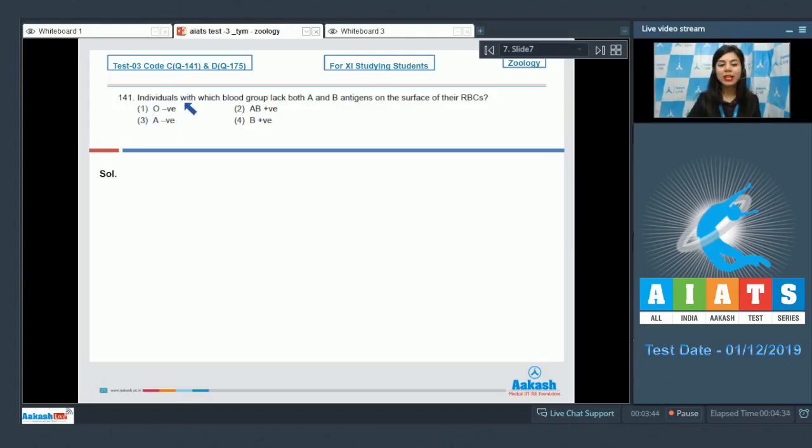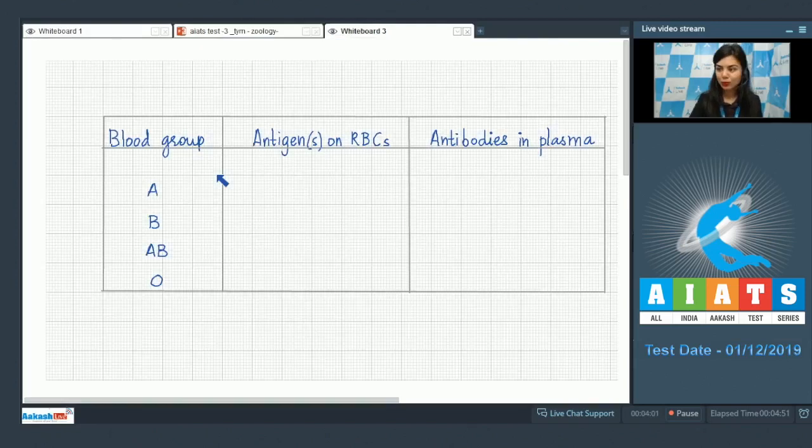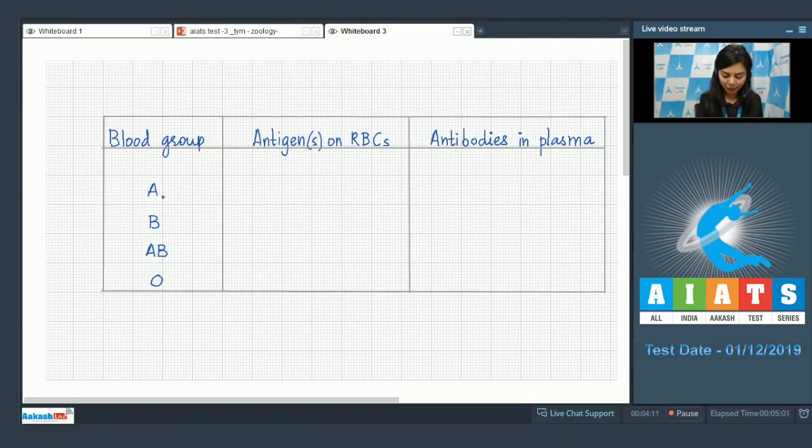Question number 141: Individuals with which blood group lack both A and B antigens on the surface of their RBCs? O negative, AB positive, A negative, B positive. Students, the ABO blood grouping is based on the presence or absence of two surface antigens on the RBCs, namely A and B.